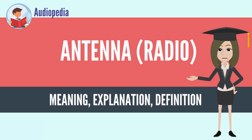An antenna is the interface between radio waves propagating through space and electric currents moving in metal conductors, used with a transmitter or receiver. In transmission, the radio transmitter supplies an electric current to the antenna's terminals, and the antenna radiates the energy from the current as electromagnetic waves.